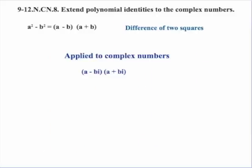What about the difference of two squares applied to a complex number? If we multiply a minus bi times a plus bi, the two middle terms add up to zero, and then we can change i squared to negative one. The result is a squared plus b squared. So instead of having the difference of two squares, we have the sum of two squares for our complex number.